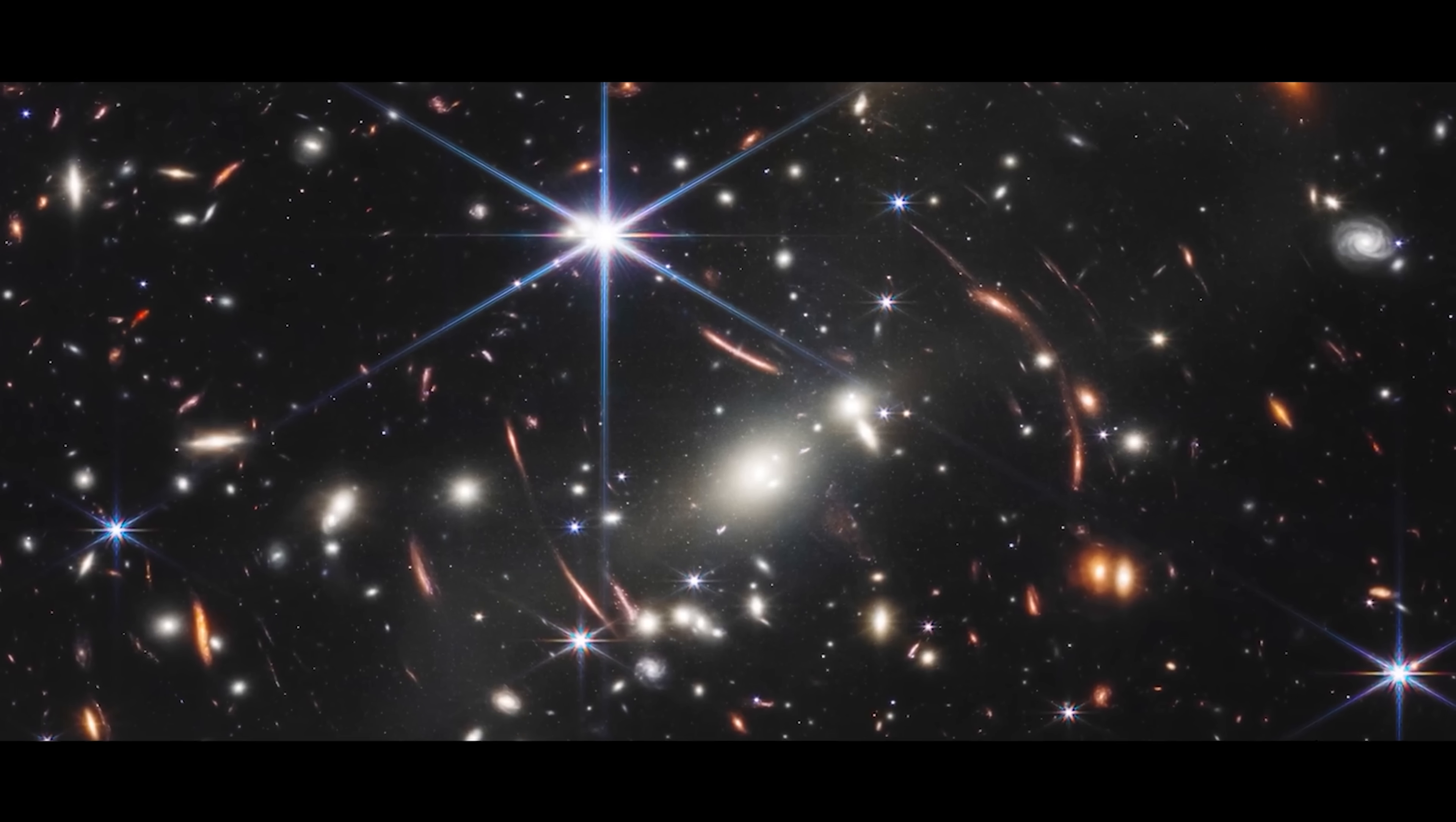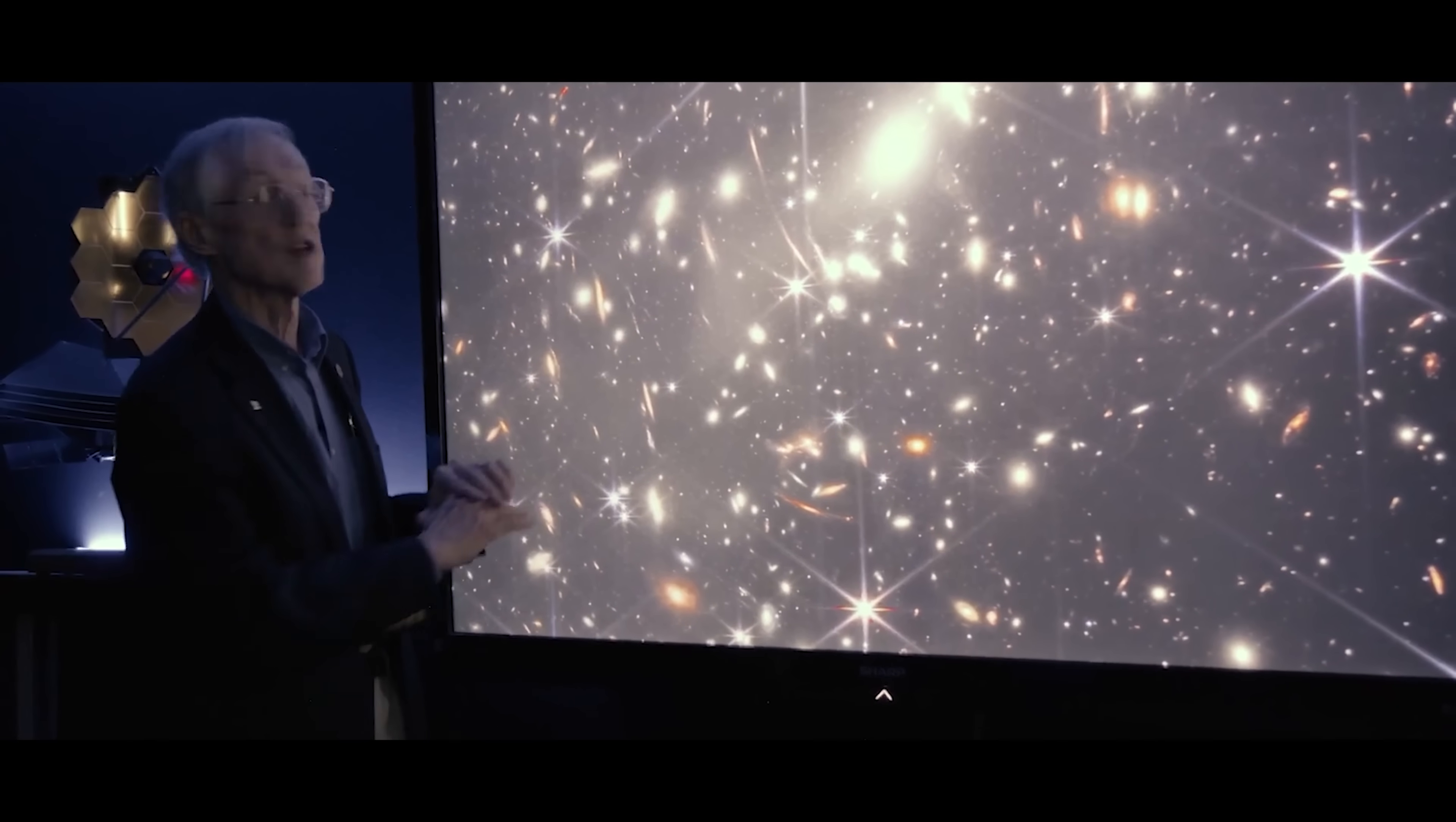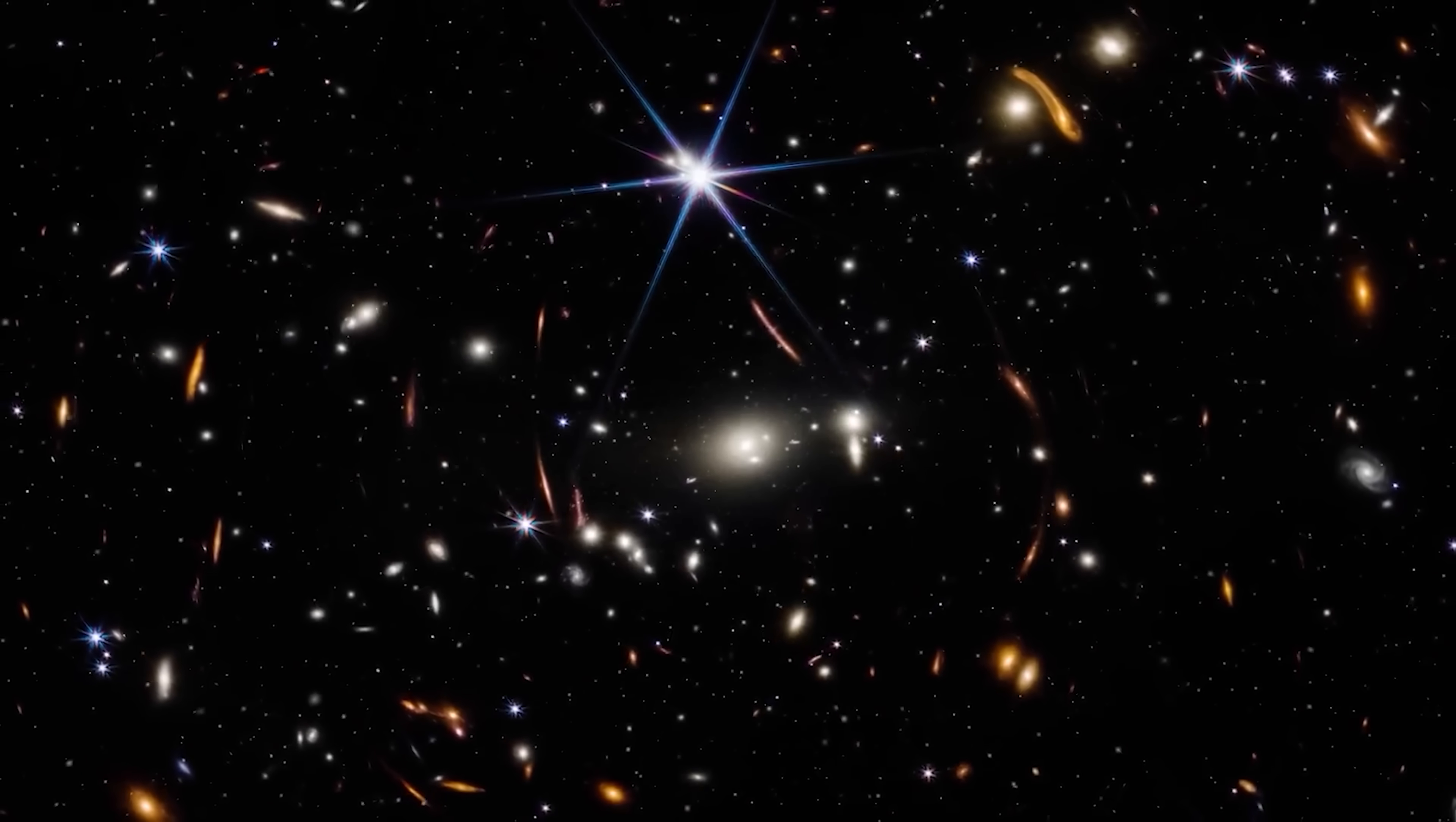Dr. John C. Mather, a Nobel laureate and lead project scientist for the Webb telescope, encapsulated the surprise during a recent press conference. "Thousands of galaxies in this little tiny area of the sky. If I took a picture of the entire sky like that, there would be hundreds of billions or trillions of galaxies altogether." He noted, "We thought we'd see that far, but we didn't think we would see what we're seeing."